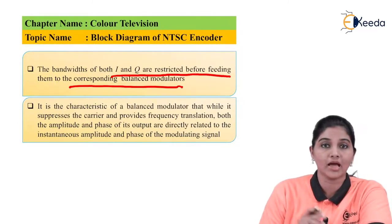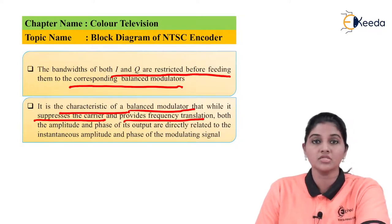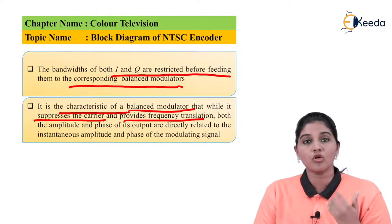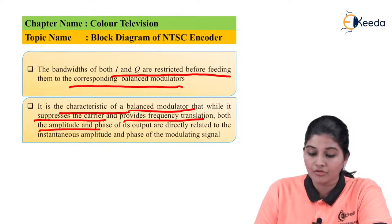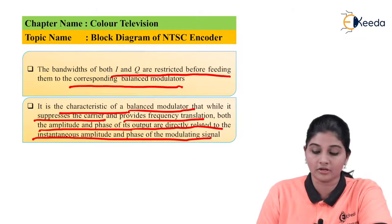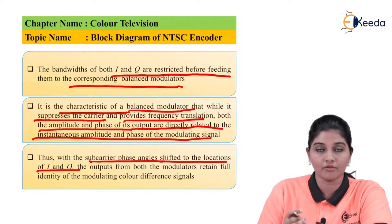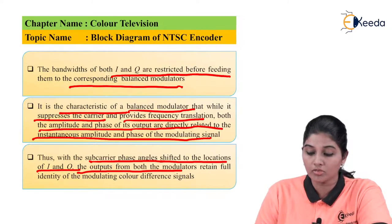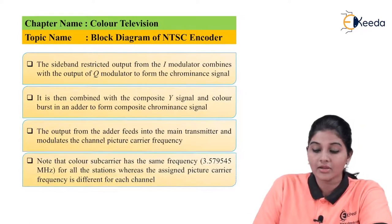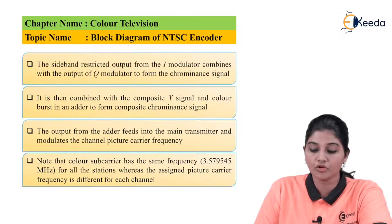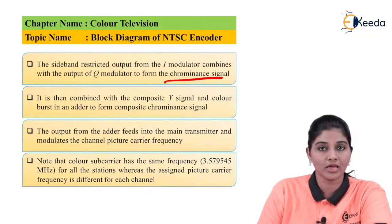The balance modulator has the characteristic that it suppresses the carrier and provides frequency translation. The I and Q balance modulators are used for suppressing the carrier to avoid interference between the carrier signal and the noise signal, and to provide frequency translation. Both amplitude and phase of the output are directly related to the instantaneous amplitude and phase of the modulating signal. The subcarrier phase angle shifts to the location of I and Q, and the output from both modulators retains full identification of the modulating color difference signals. The sideband-restricted output from the I modulator combines with the output of the Q modulator using an adder to form a chrominance signal, which is then combined with the Y signal.